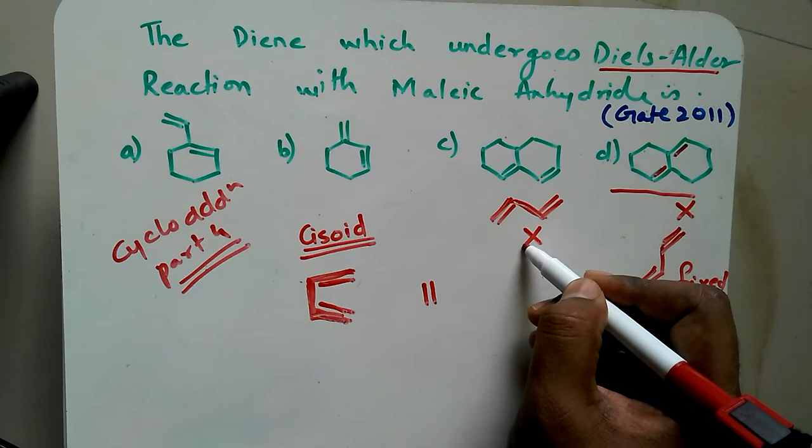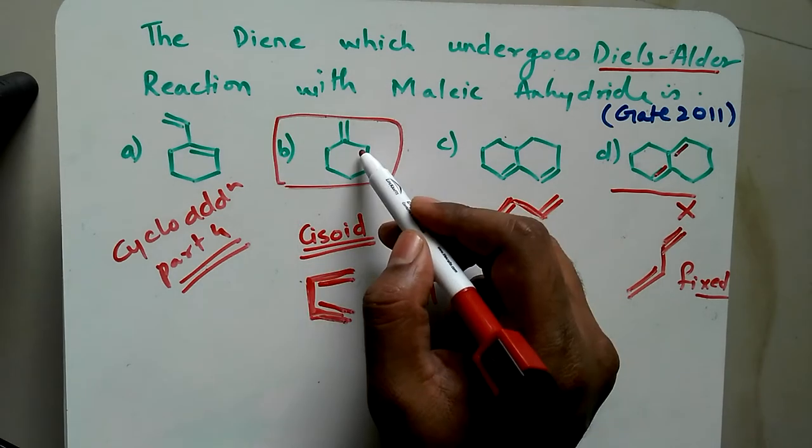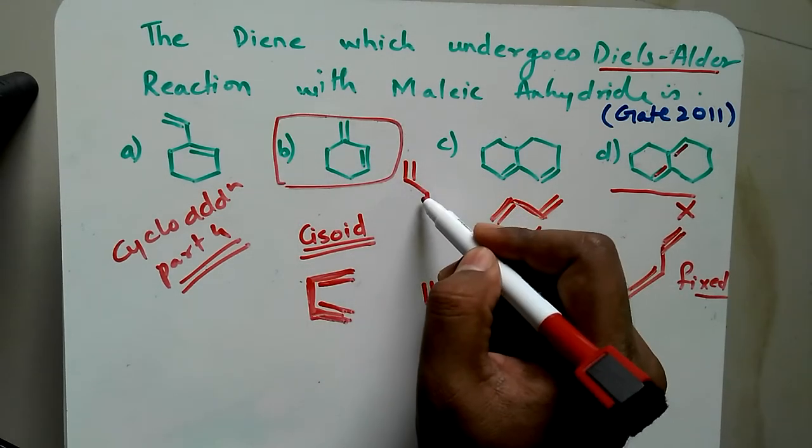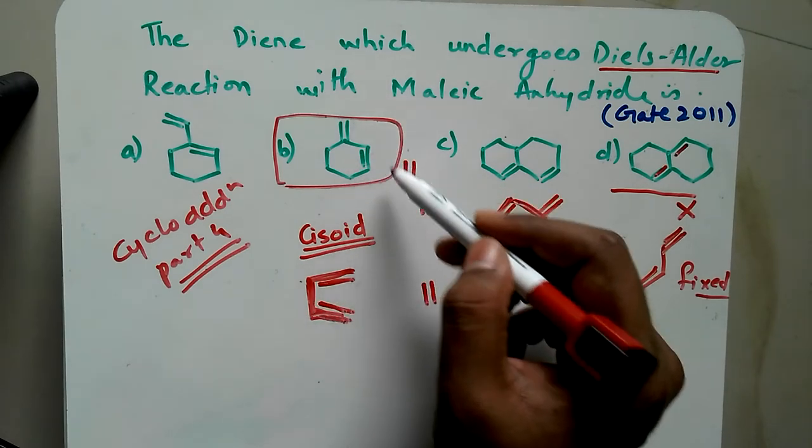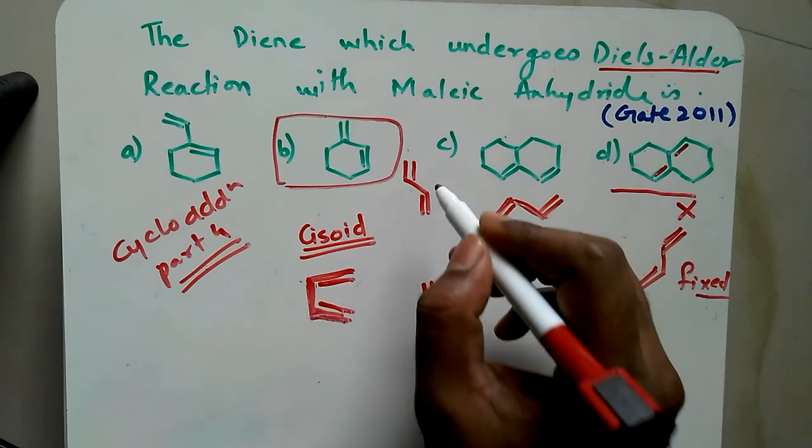If you consider option B, again the double bonds are away from each other. They are not in the cisoid condition, and by any means you will not be able to bring it into this cisoid condition. So again, this part will not give you the Diels-Alder reaction.